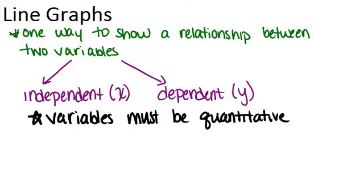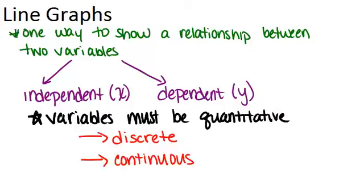Now you can have two different types of quantitative variables that will work with line graphs. You could have discrete variables or continuous variables. The difference between discrete and continuous variables is discrete variables only exist at certain values whereas continuous variables exist everywhere between some range of values.